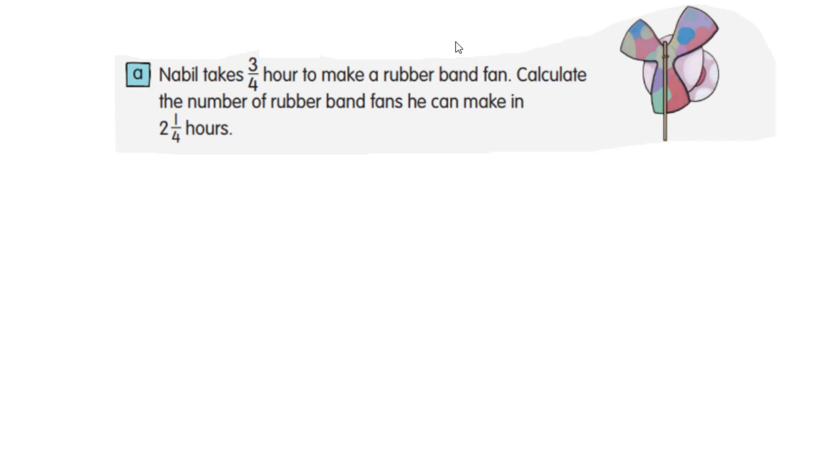So for one rubber band fan, he takes 3/4 hours. So in 2 1/4 hours, he can make how many rubber band fans? We need to divide 2 1/4 hours divided by 3/4.